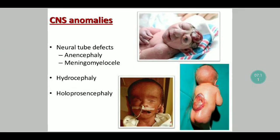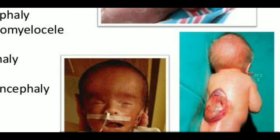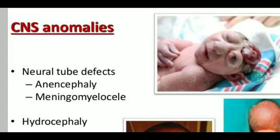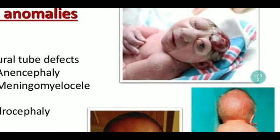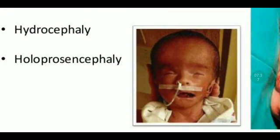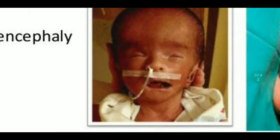For CNS anomalies, all neural tube defects can be seen, including anencephaly and meningomyelocele. Hydrocephalus is common along with holoprosencephaly. This image characteristically shows meningomyelocele, a preventable neural tube defect. This child also has advanced anencephaly. This child has hydrocephalus with a shunt in situ post-surgical correction.